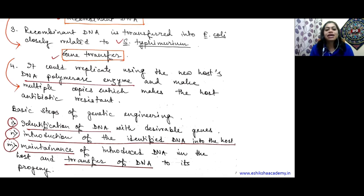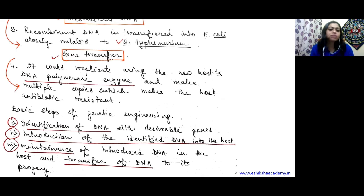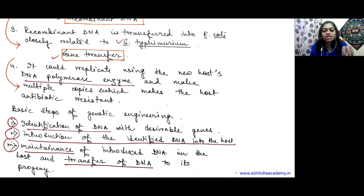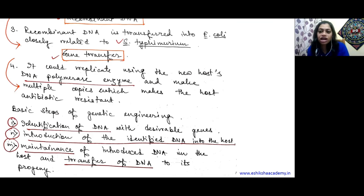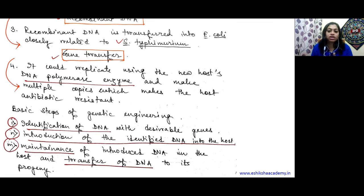Next, this recombinant DNA is transferred into E. coli, which is closely related to Salmonella typhimurium. E. coli is another bacteria, but it is very closely related to Salmonella from an evolutionary point of view. We transferred Salmonella's plasmid DNA as a vector with the antibiotic-resistant gene into E. coli. The E. coli cells are used because if they are too distantly related, they will treat recombinant DNA as foreign DNA and it will not replicate. It should be in a similar environment - closely related hosts - so the DNA can be maintained.